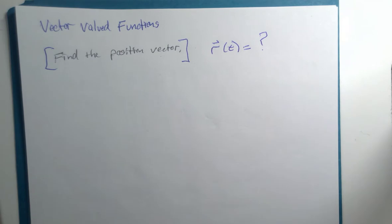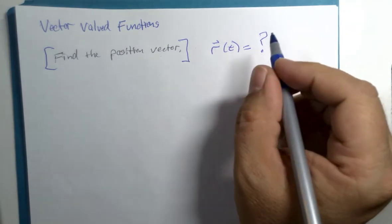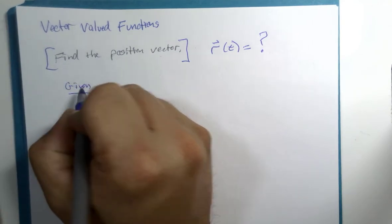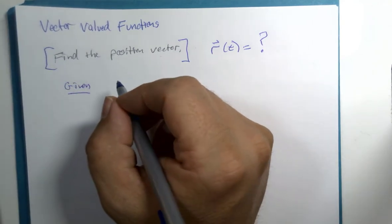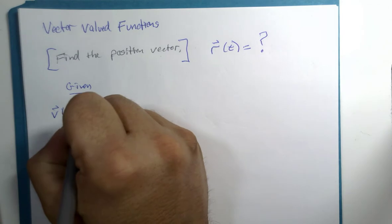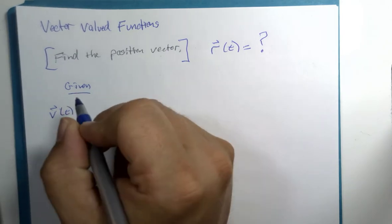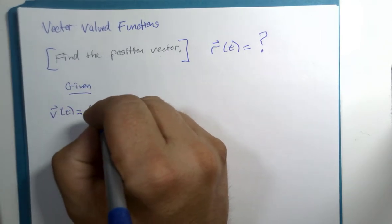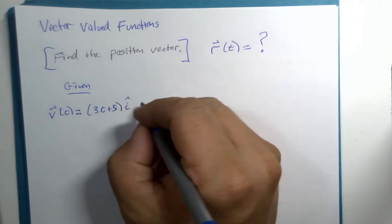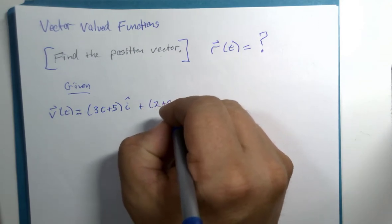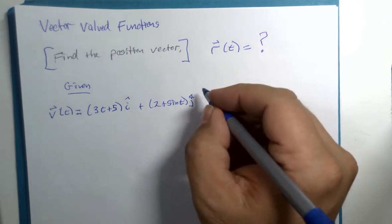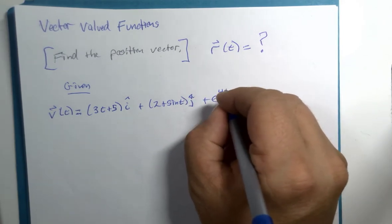So we're trying to find a position vector, and here's what we're given. We're given that the velocity vector is 3t plus 5i plus 2 plus sin t j plus e to the 4tk.